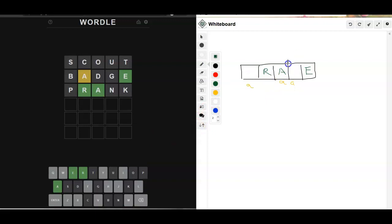It could be erase. It could not be erase because we already discounted the S. Okay, that doesn't work. Oh, it could be frame, right? That's a possibility. It could be frame. That would work. We've still got the F. We've still got the M.